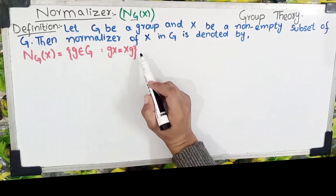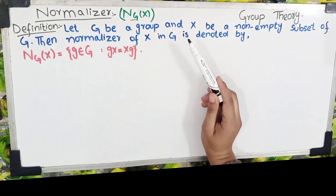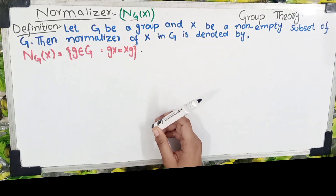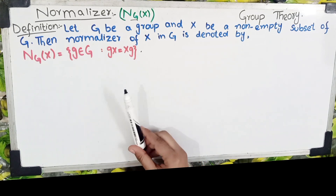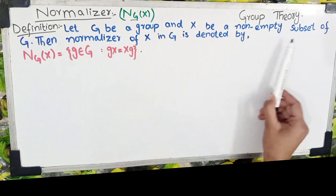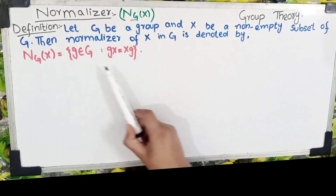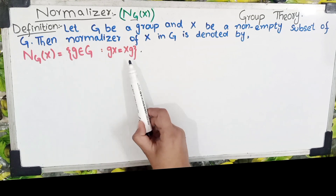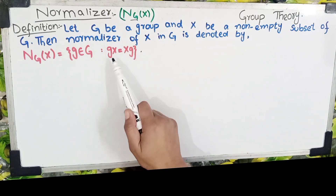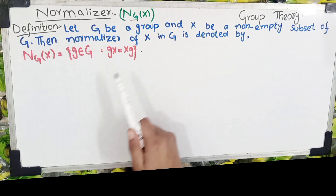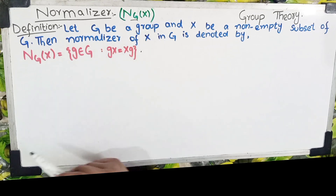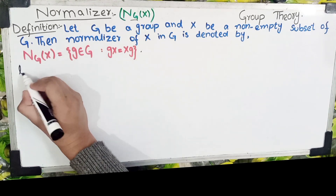ہمارے پاس ایک group ہوگا اور ایک subset ہوگا اسی group میں سے۔ ہم نے کیا کرنا ہے کہ group کے elements کو subset کے elements کے ساتھ permute کرائیں گے اور جو permute کر جائیں گے وہ normalizer کے set میں آ جائیں گے۔ g x is equal to x g — یعنی پورے subset کو g کے ایک ایک element کے ساتھ permute کرائیں گے۔